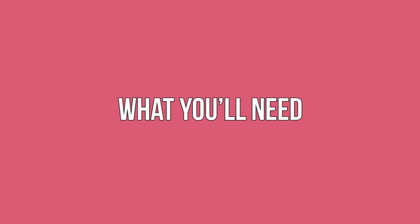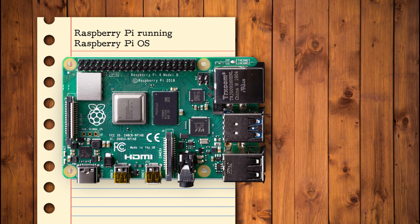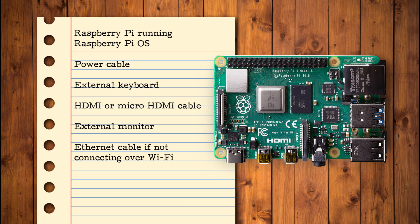What you'll need: To complete this tutorial you will need a Raspberry Pi running Raspberry Pi OS, a power cable compatible with your Raspberry Pi, an external keyboard and a way to attach it to your Raspberry Pi, an HDMI or micro HDMI cable depending on your model of Raspberry Pi, an external monitor, and an ethernet cable if not connecting over Wi-Fi.